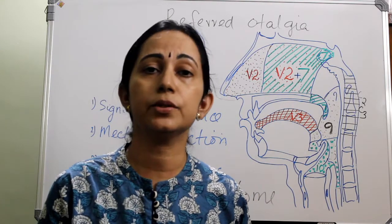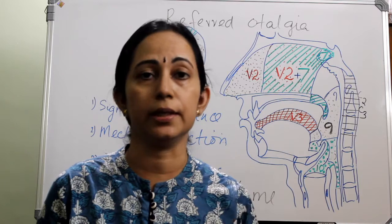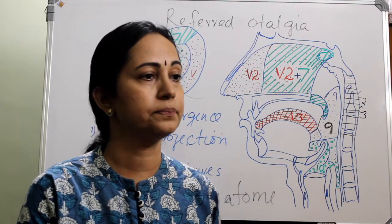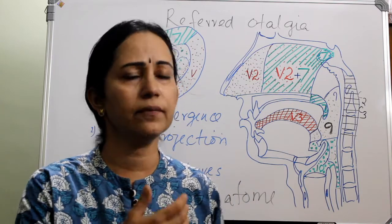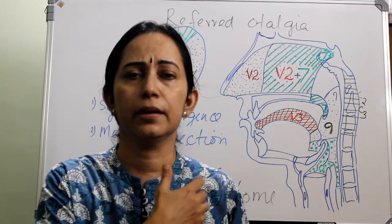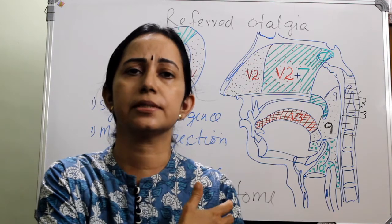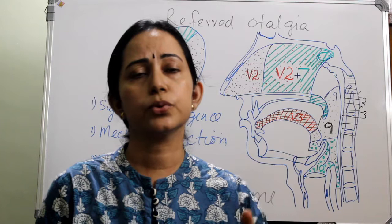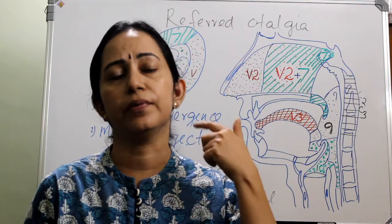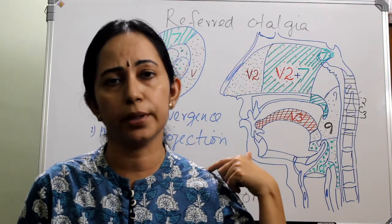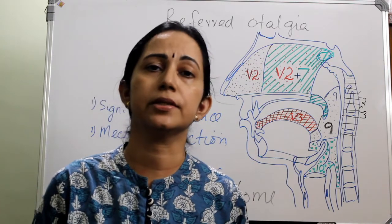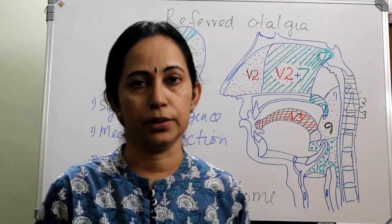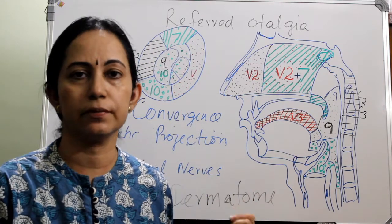This can happen not only in the ear. For example, when there is cardiac pain, it will manifest as pain in the left lower arm and shoulder. When there is an irritated lesion in the diaphragm, referred pain also occurs. These are all examples of the convergence projection theory.